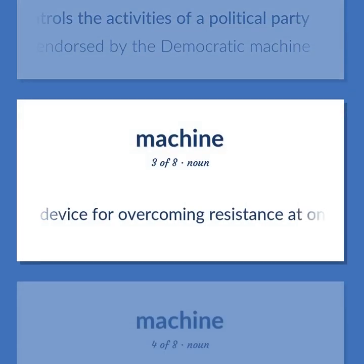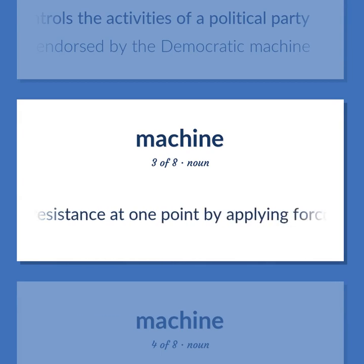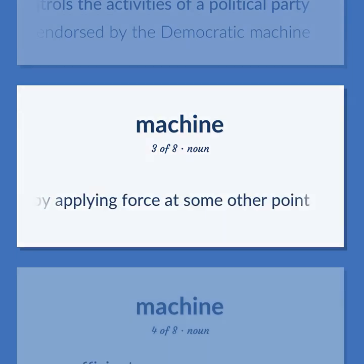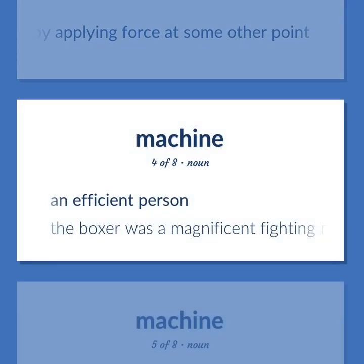MACHINE: A device for overcoming resistance at one point by applying force at some other point. An efficient person. Example: The boxer was a magnificent fighting machine.